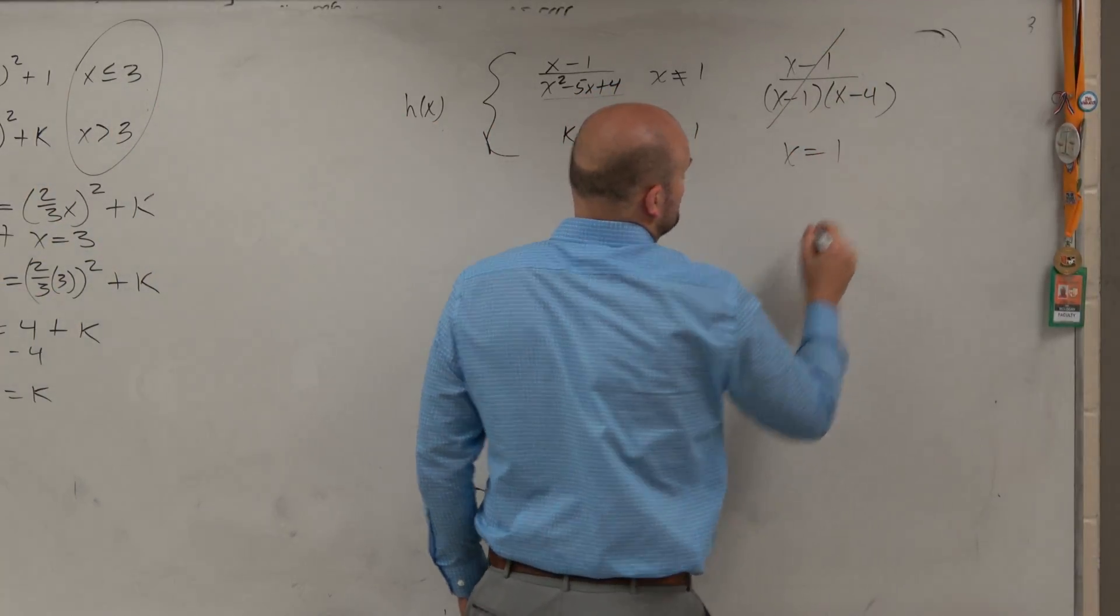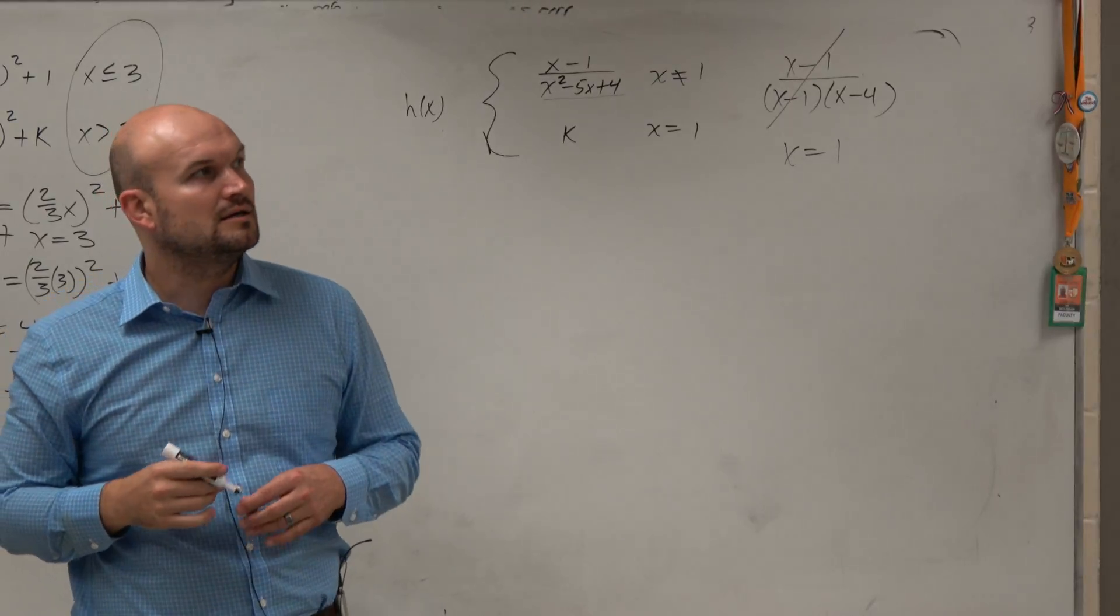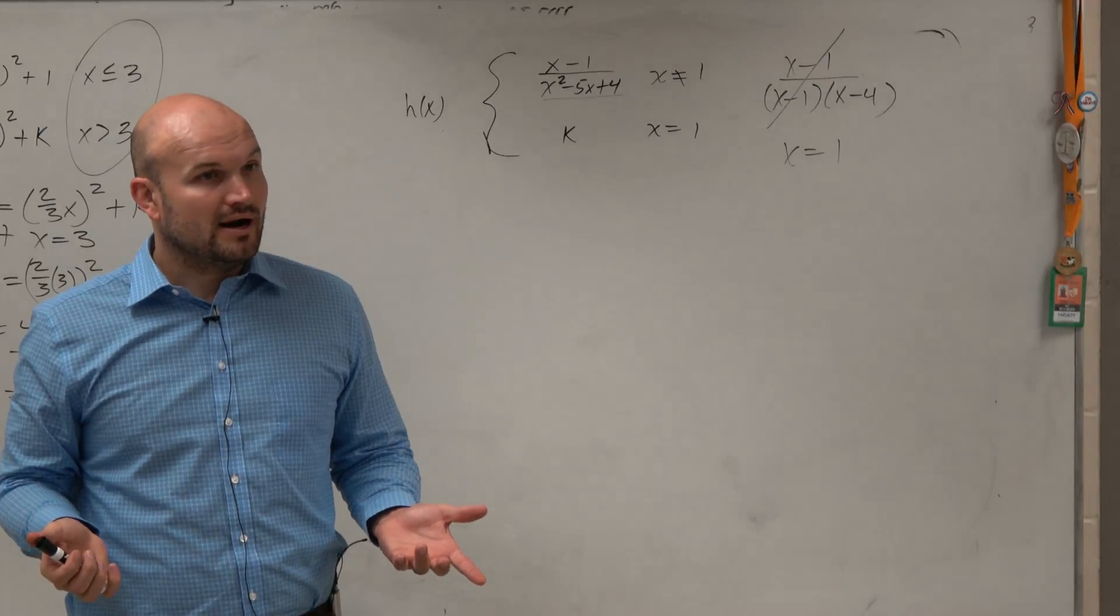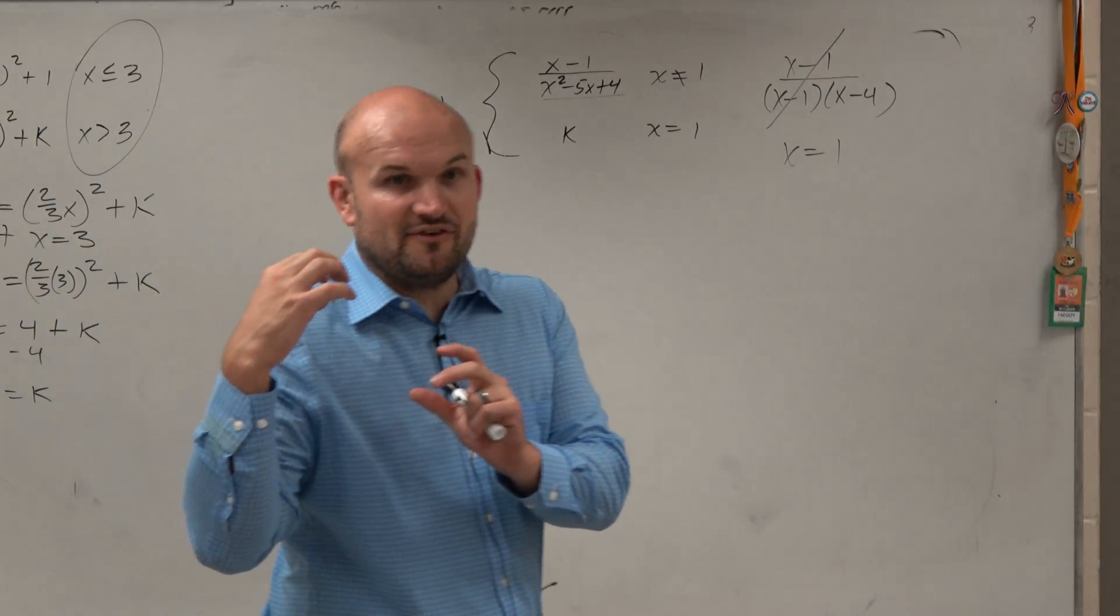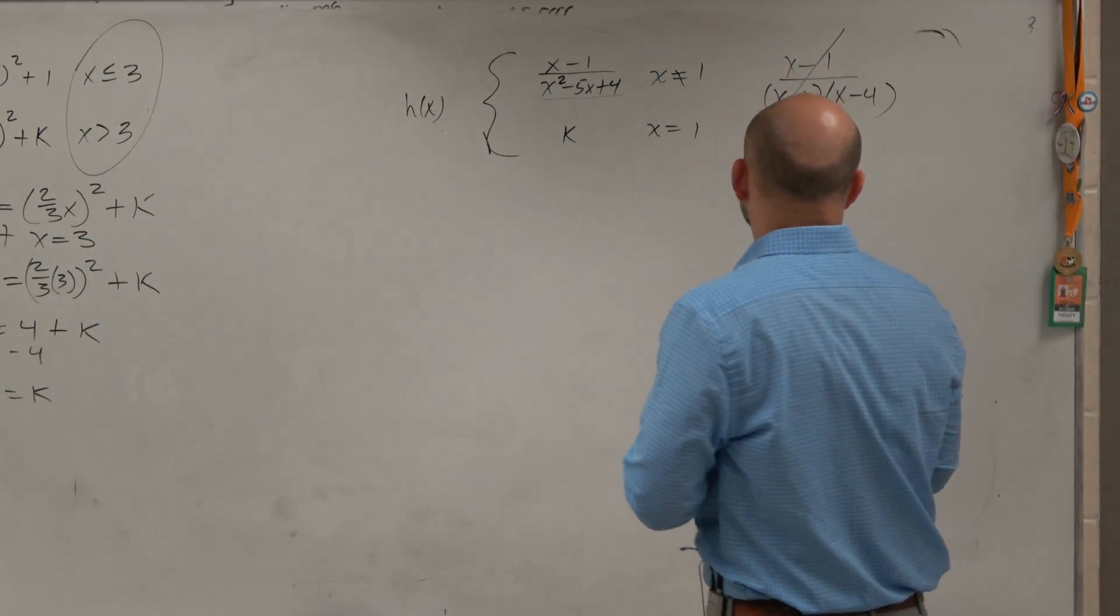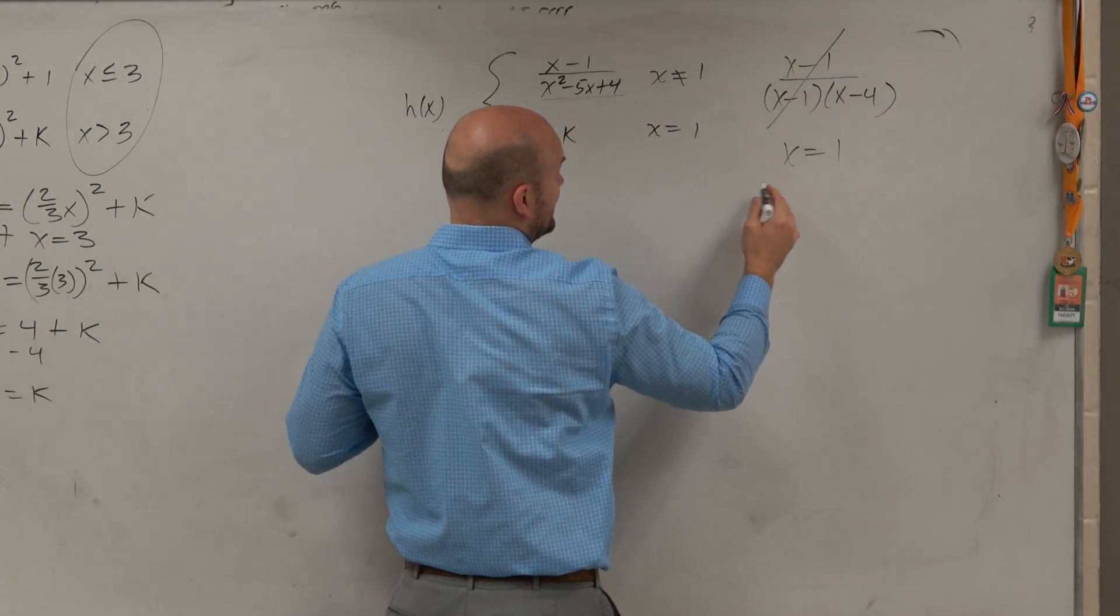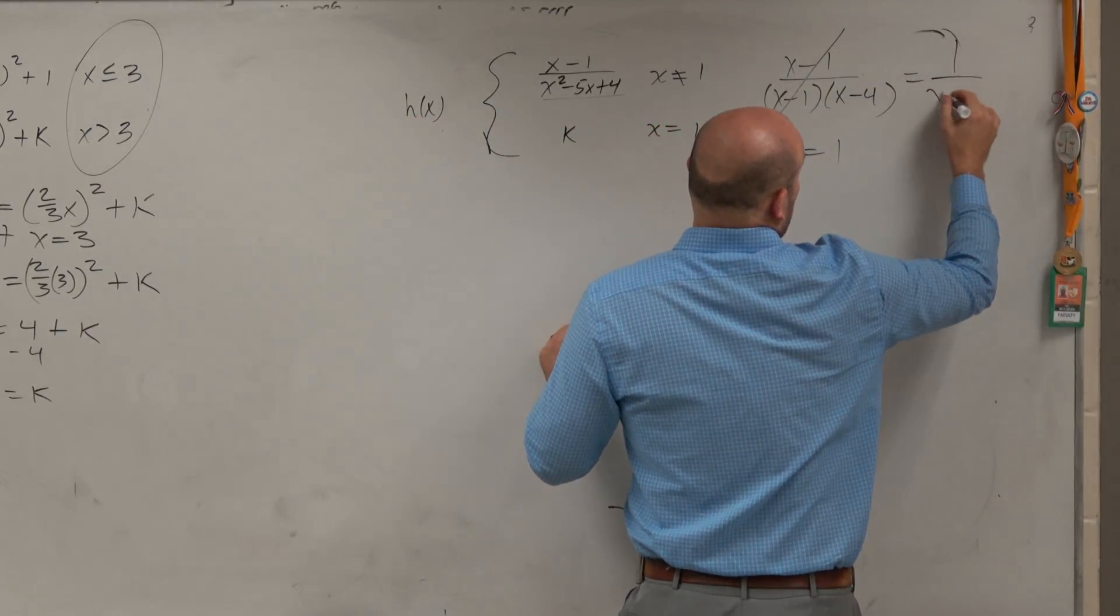That means that x equals 1 is actually a, starts with an h and rhymes with pool. It's a hole, right? And we did a function like that that creates a hole. So what we end up with, the simplified version here, is 1 over x minus 4.